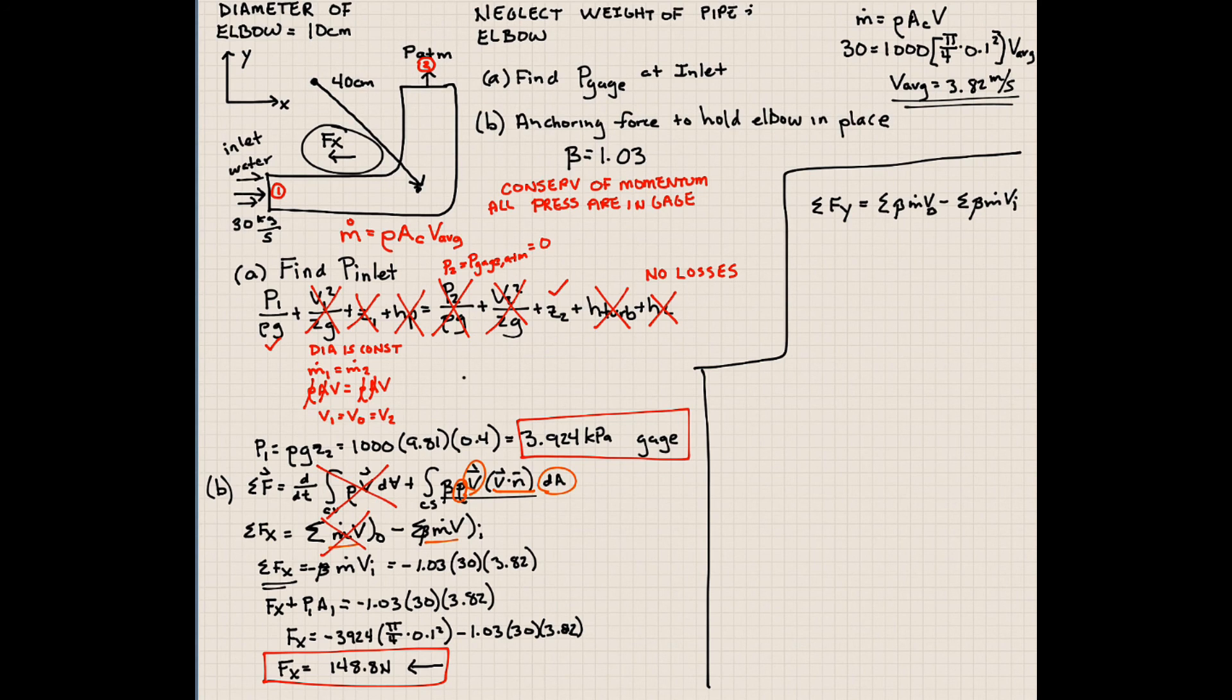We're neglecting the force of the weight of our water in our pipe. And we're going to guess that the force we need, let's say it's coming up like this. We're going to guess it's positive y, that our bolt needs to support it going upwards, positive y. So we're going to say force in the y direction is equal to 1.03 times the mass flow rate times the velocity, which is the same at the inlet and the exit.